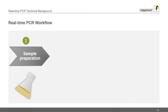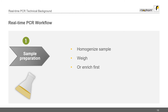What is the workflow when using PCR test kits? First of all, the sample needs to be prepared. A very well homogenized sample is either directly weighed into the lysis tube, or if looking for pathogens, the sample needs to be enriched overnight in most cases beforehand. Please note: it is very crucial to have a representative sample.